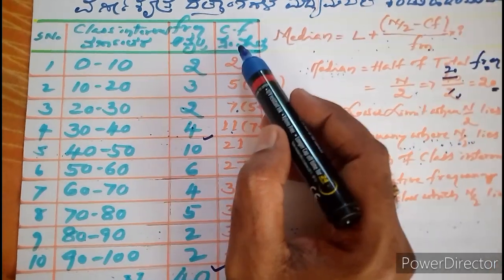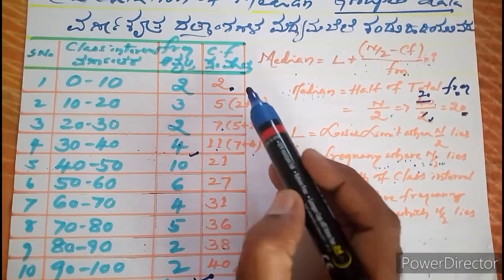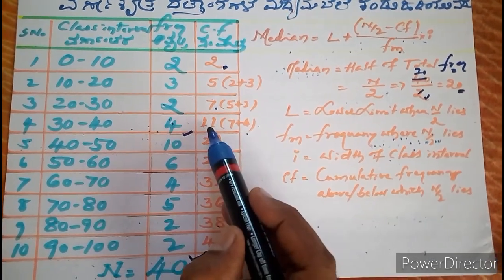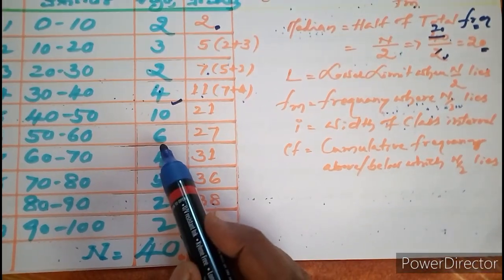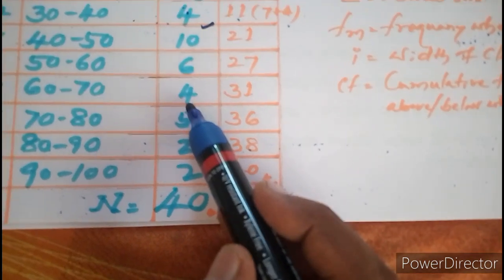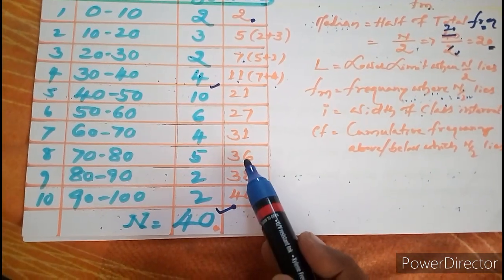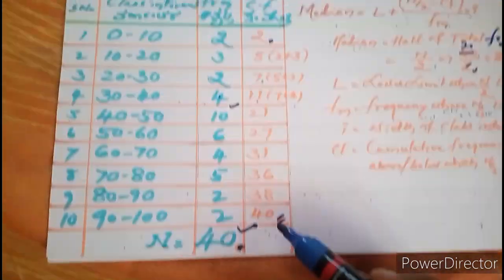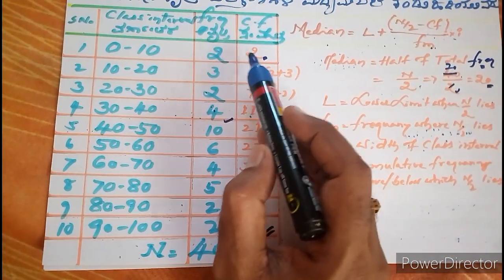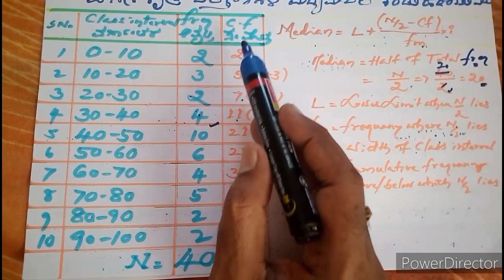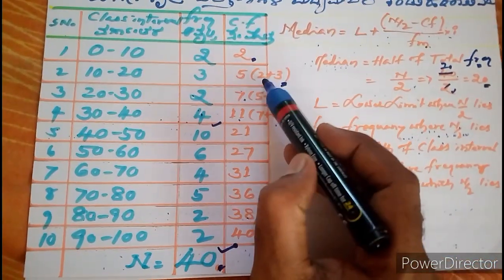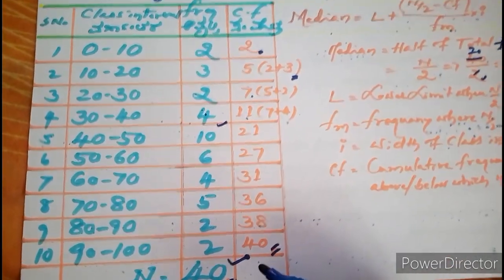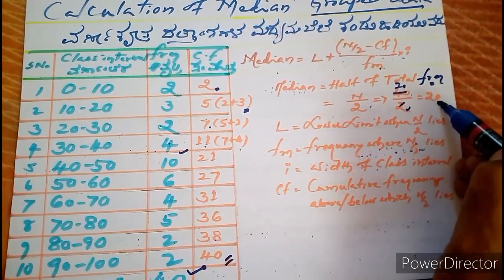To find the cumulative frequency: you write 2 as it is. Then add 2 + 3 = 5. Then 5 + 2 = 7. Then 7 + 4 = 11. Then 11 + 10 = 21. Then 21 + 6 = 27. Then 27 + 4 = 31. Then 31 + 5 = 36. Then 36 + 2 = 38, and 38 + 2 = 40. The last cumulative frequency always equals the total frequency. After calculating the cumulative frequency, we locate 20 in this table — and we find 21 is where it lies.